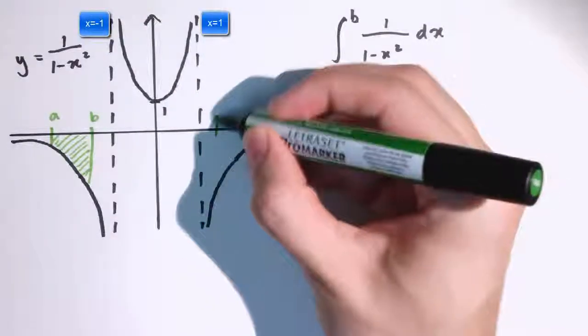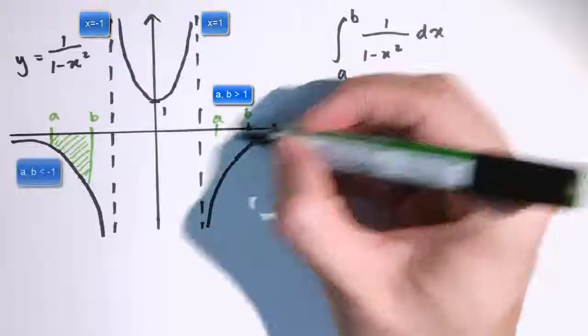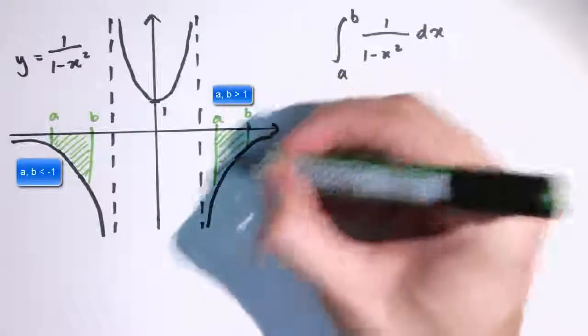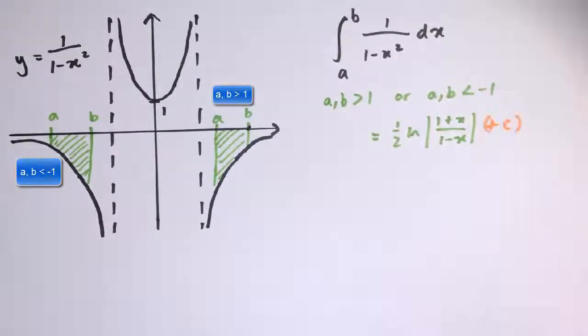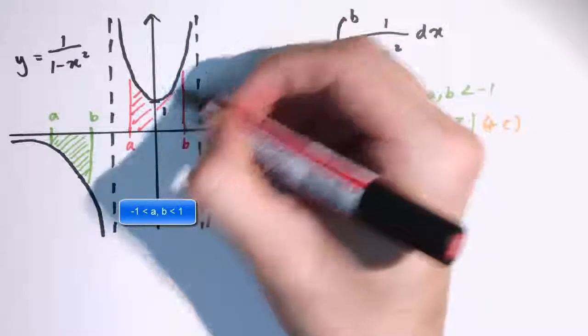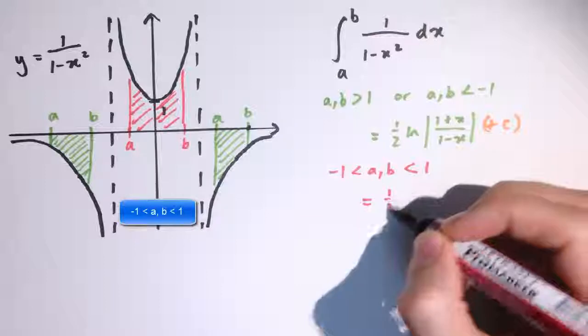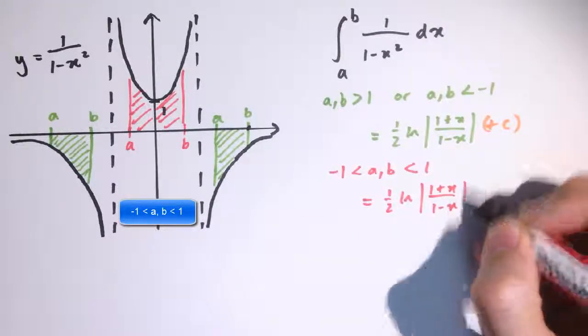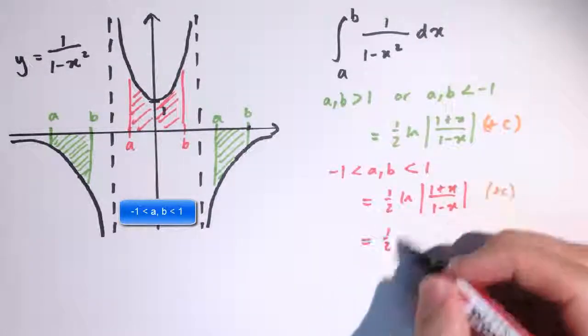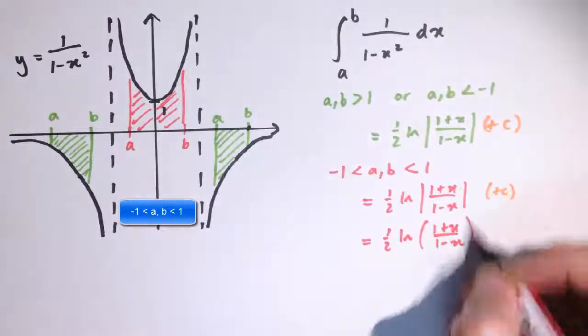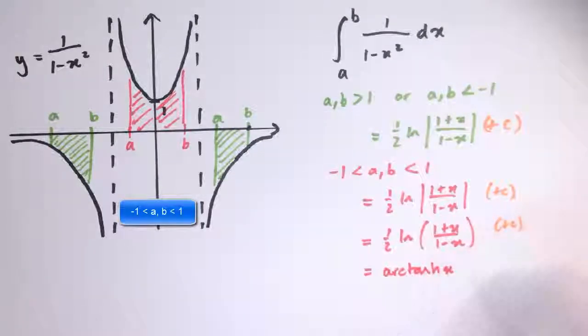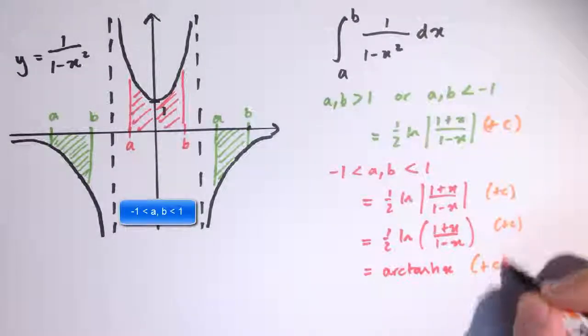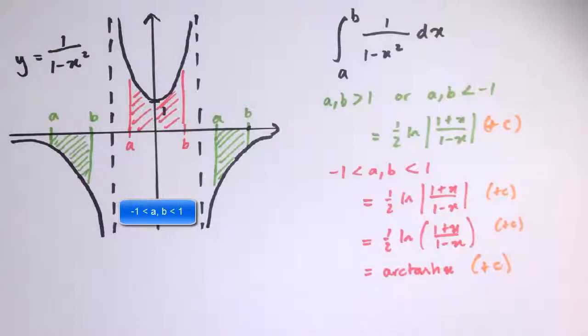The integral only makes sense in the first instance, where a and b are both bigger than 1 or smaller than minus 1, and then the integral is 1 half log mod 1 plus x divided by 1 minus x plus c. And the other case it makes sense is when a and b are between minus 1 and plus 1. And in that case, you can check that 1 half log mod 1 plus x over 1 minus x is just the same thing as a half log 1 plus x over 1 minus x without the modulus signs. And in that region, it agrees with arc tanh x, and we remember that that's exactly the region on which arc tanh x is defined.